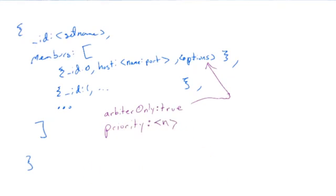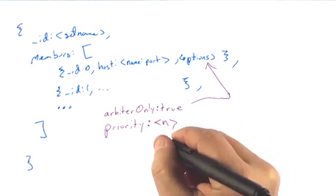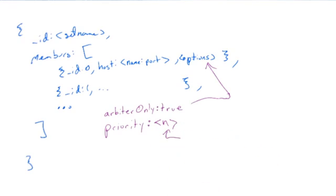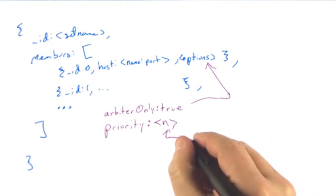Another option is called priority. Priority is used when you want to indicate some bias as to which server should be primary if both are eligible to be primary. What you can do here is you can put in a value that's a number, and the higher the number, the higher the priority of the server. So by default, everything gets 1.